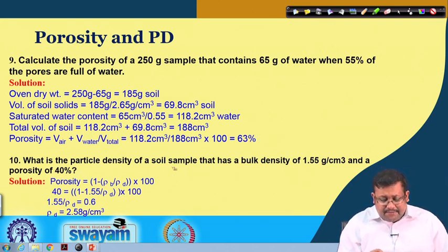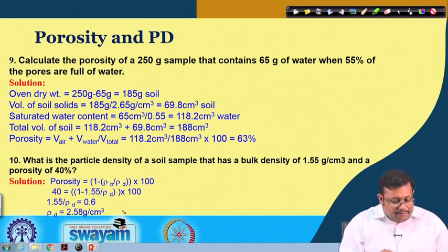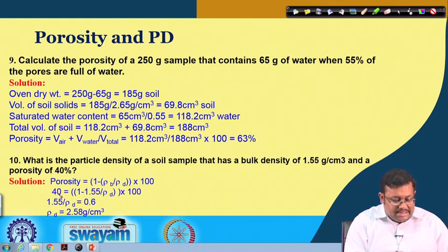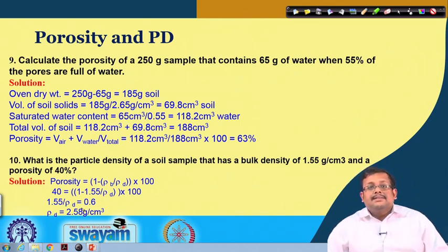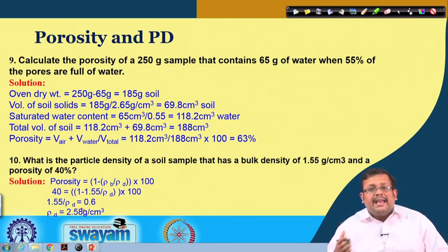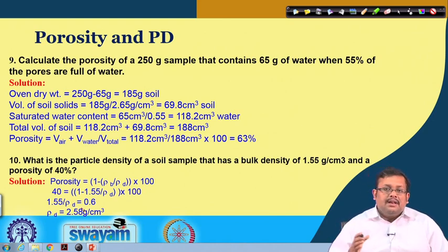Final question: what is the particle density of a soil sample with a bulk density of 1.55 grams per cc and a porosity of 40 percent? Using the formula: porosity equals 1 minus (bulk density over particle density) times 100, with porosity equal to 40 and bulk density equal to 1.55, we can solve for particle density, giving 2.58 grams per cc. These problems covered porosity, particle density, and moisture content calculations.